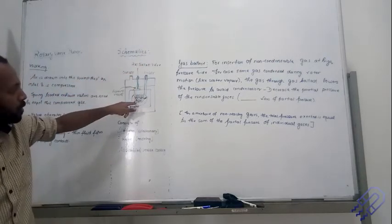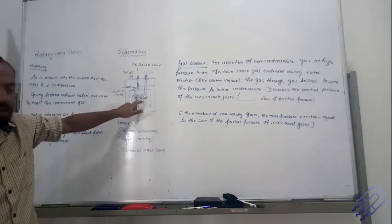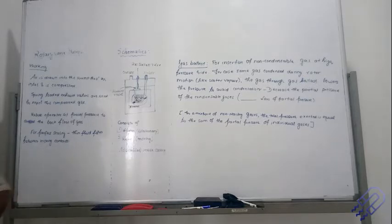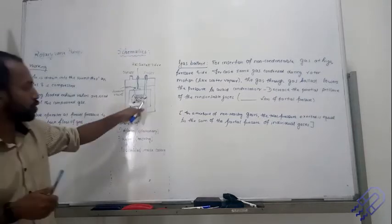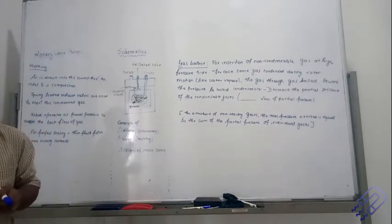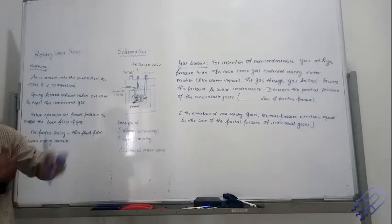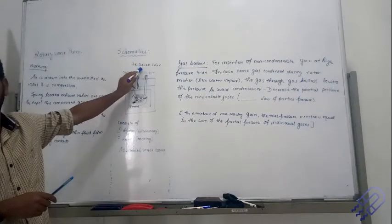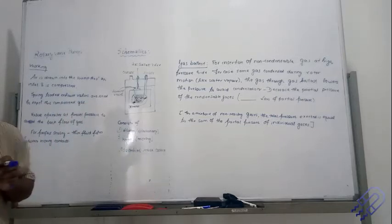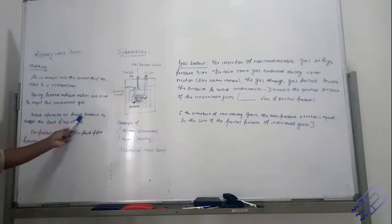When the rotor rotates, whatever air is trapped between the vanes gets compressed. Whenever there is compression, there is a chance of condensation because of the change in pressure — high pressure increases condensation chances. To avoid this, a non-condensable gas is introduced through a gas ballast valve, which modifies the pressure at which condensation occurs. The ballast valve operates at a preset pressure to avoid condensation of gas already present.